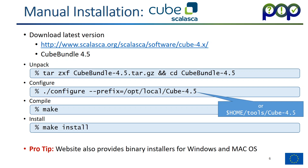Once the configure is done, you type 'make', which starts the compilation process. It probably takes a while to compile all the files and link them together. Once this is done, you say 'make install', which takes all the compiled programs and necessary files and puts them into the directory you specified with the prefix. These are the commands if you want to install it on a Linux laptop or system.